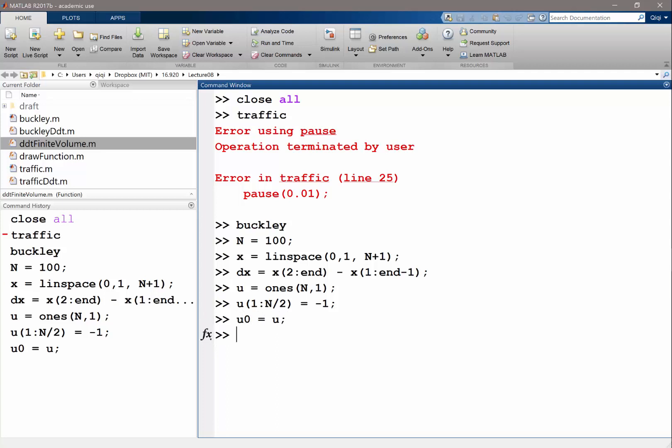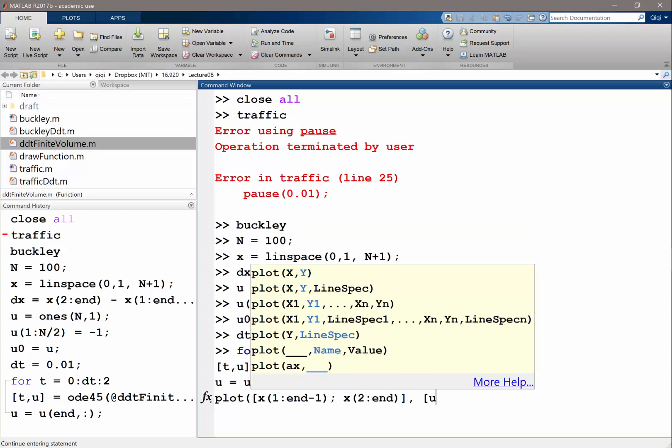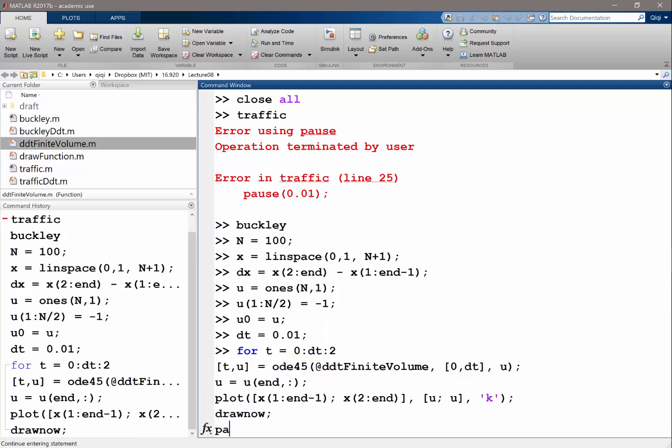Now let's do a loop. dt equal to 0.01 to start with. And for t goes from 0 to dt to, let's say, 2. And t and u is ode45, my ddt finite volume which I just coded, 0 dt and my u. And u is equal to u end column. Let's plot x 1 to n minus 1, x 2 to n, and I'll do u and u, black. Draw now and pause dt.